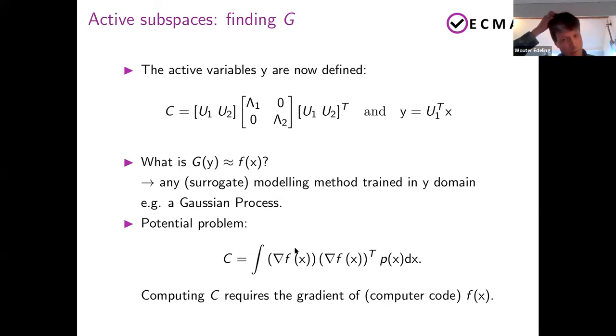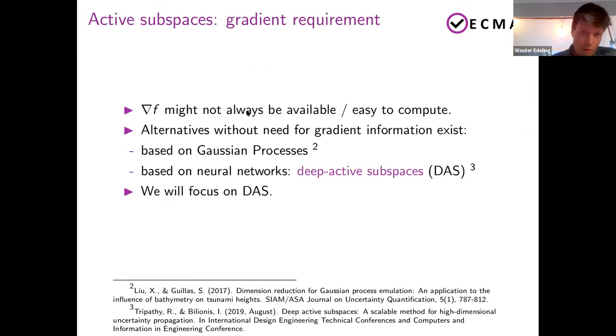Now the issue here with C, it depends of course on the gradients. So you need to be able to compute that. And this is not always easy. If you can do it though, I think it's a very good method to use. And probably better than the method that I'm going to describe. But you know, if you have a lot of inputs, maybe this is not feasible. Or maybe there's some weird bifurcation behavior. Or there might be all kinds of problems why it might be hard to compute your gradients. And so there are alternatives that use active subspace-ish ideas, but without having gradient information. One of them is based on Gaussian processes that's done by Serge Guiyas and his students. And the other one is based on neural networks. And they were introduced by Tripathy and Bilionis, I think from Penn State in the US. And that's the one I will focus on.